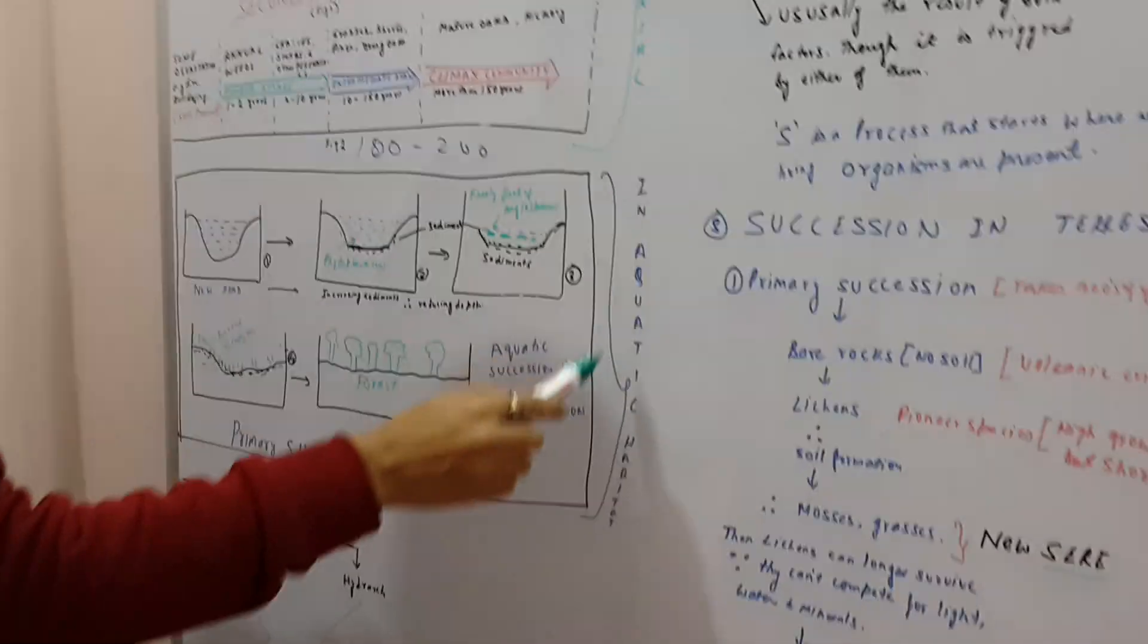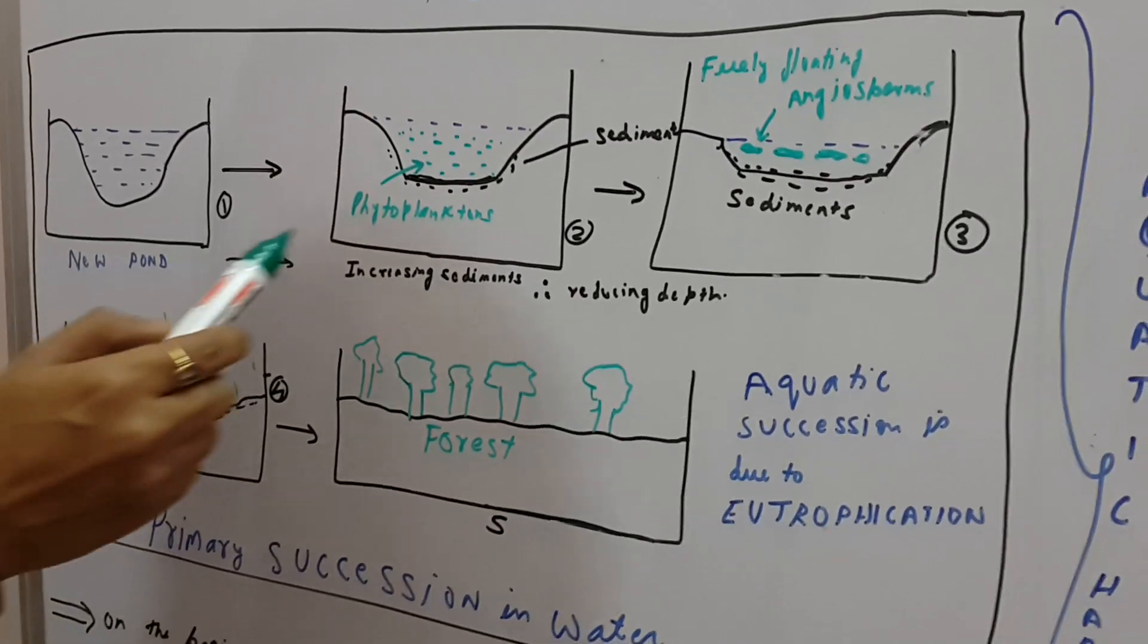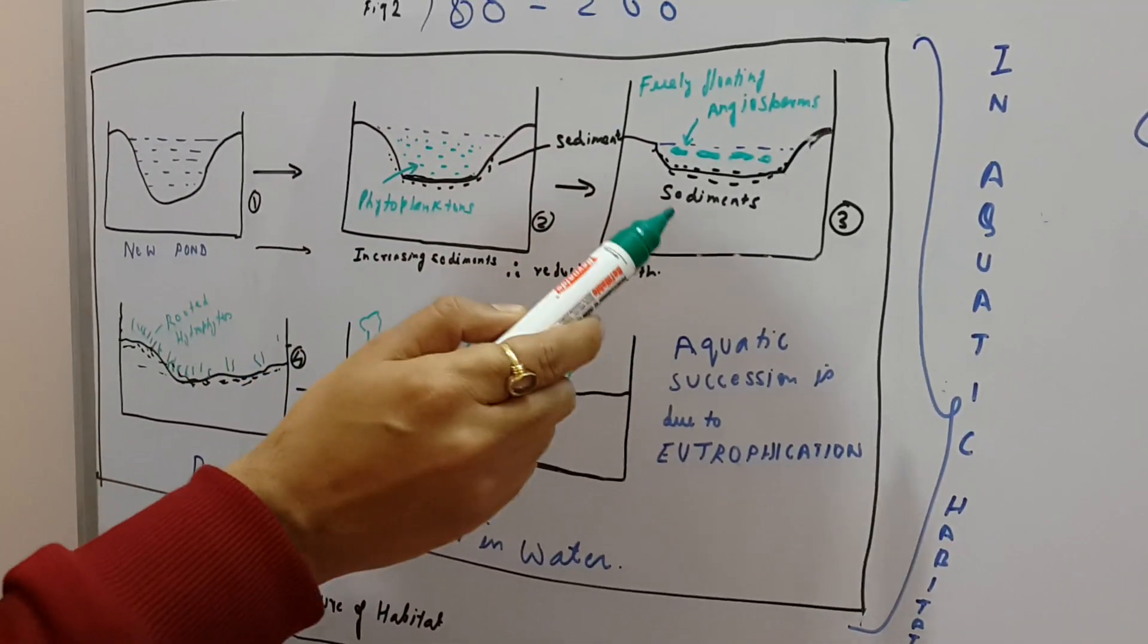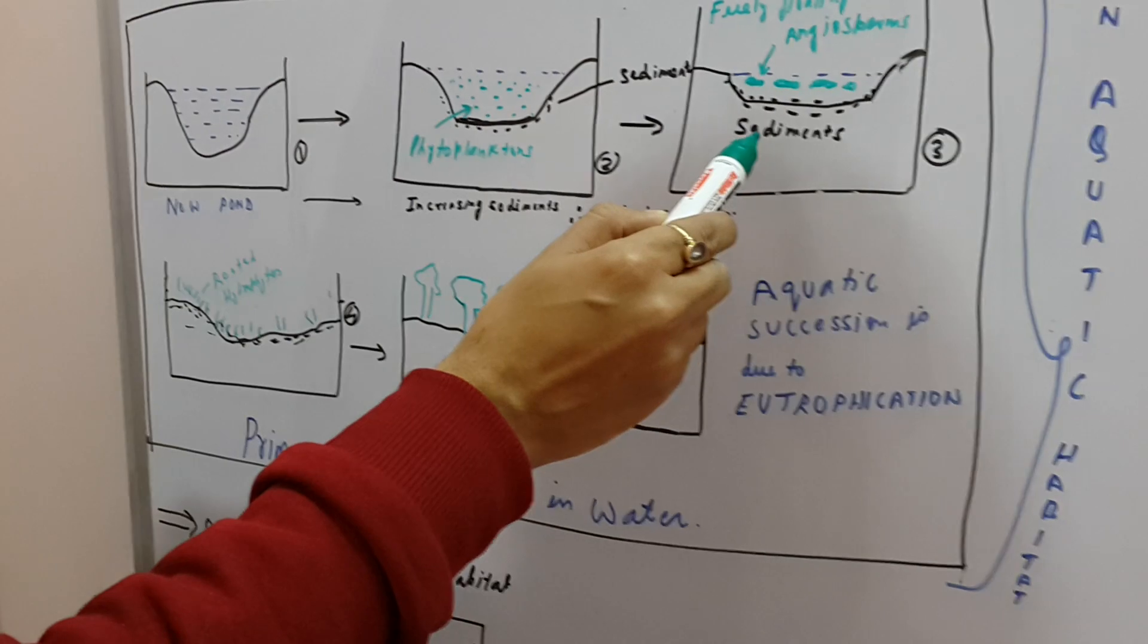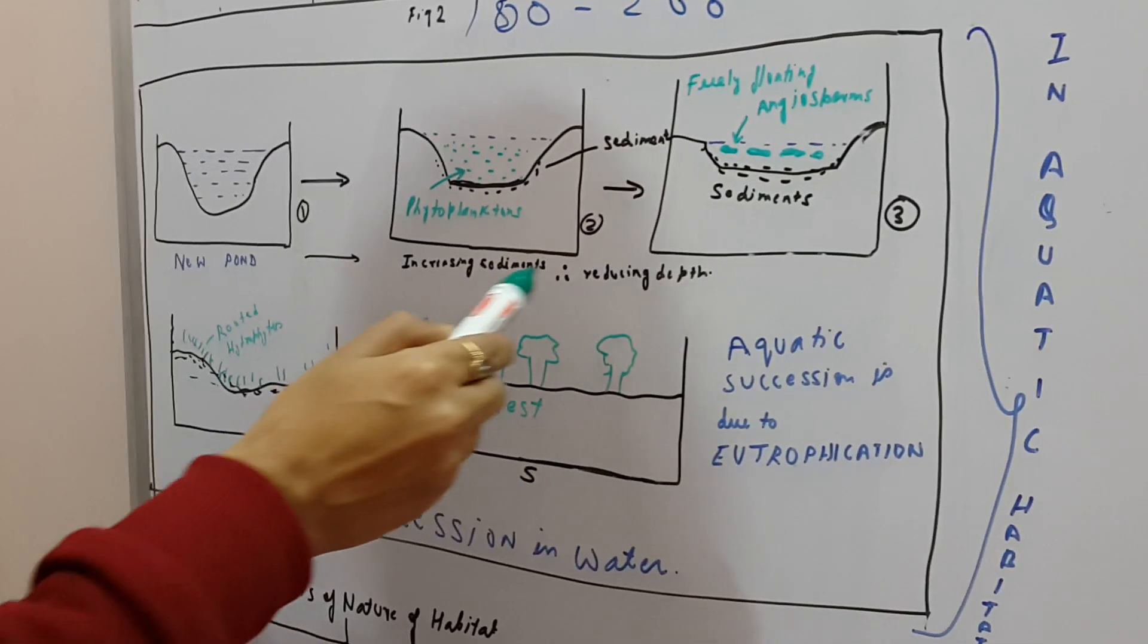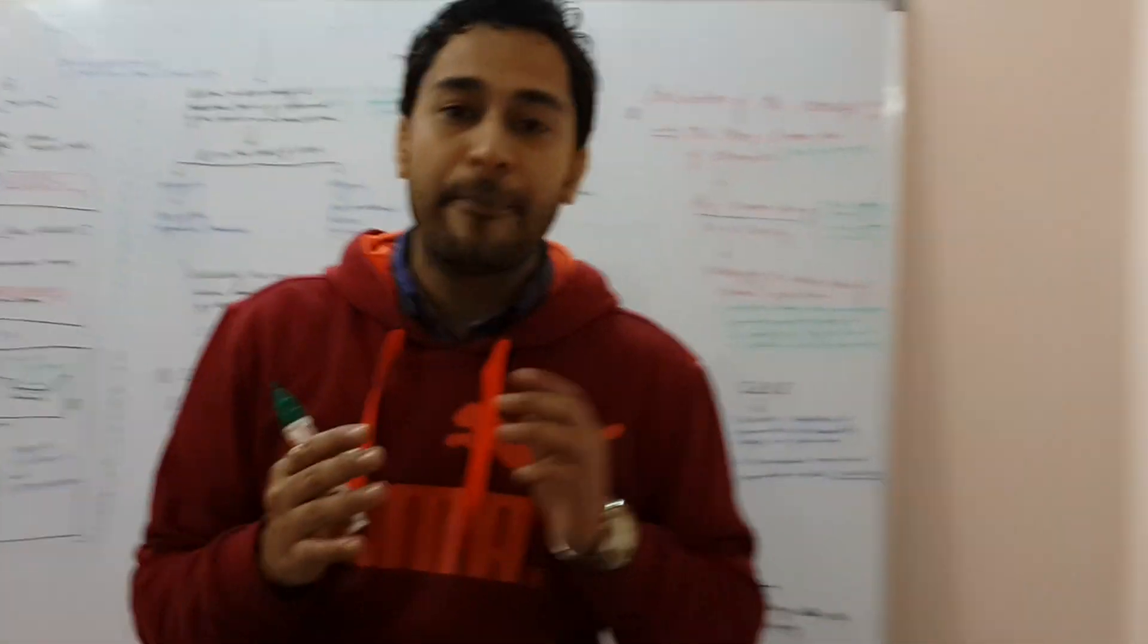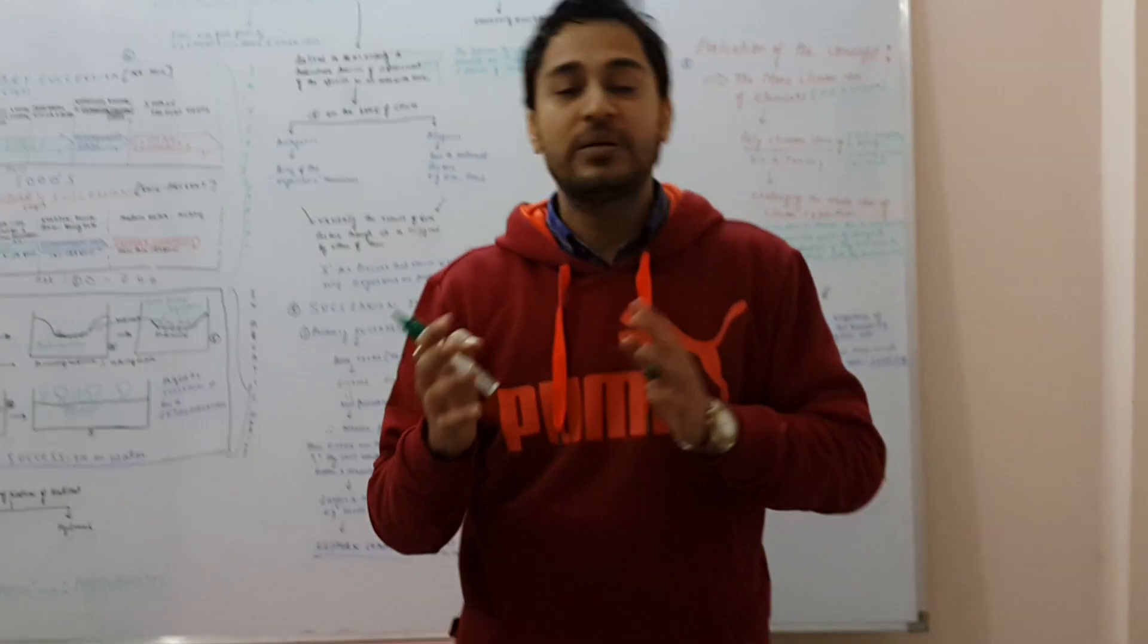Now let's look at it in a terrestrial habitat. For example, there was a new pond which came in, so phytoplankton initially came in. These can be called the pioneer species. Now let's observe this one important thing: in the aquatic habitat, as the process continues, the sediments start increasing, and this reduces the depth of the pond or the aquatic body. The ultimate product becomes a forest. I would like to add a very important thing that aquatic succession happens because of eutrophication. Eutrophication is a process whereby a water body becomes rich in nutrients.